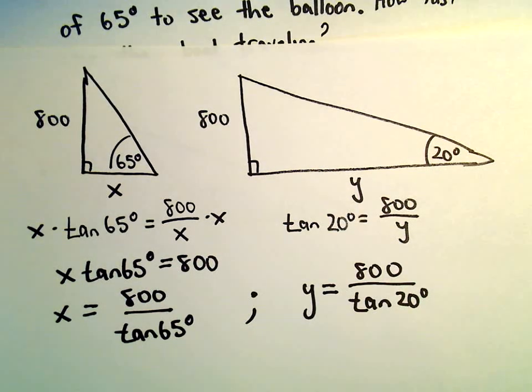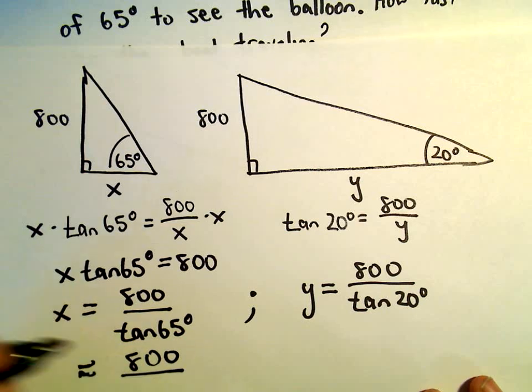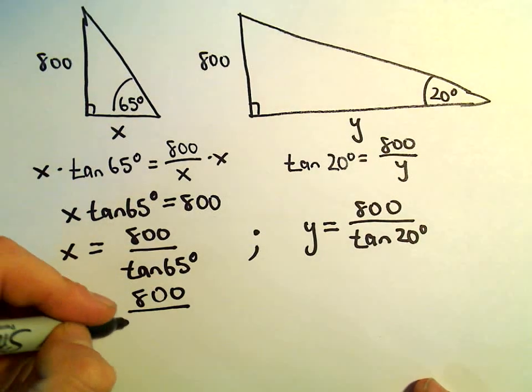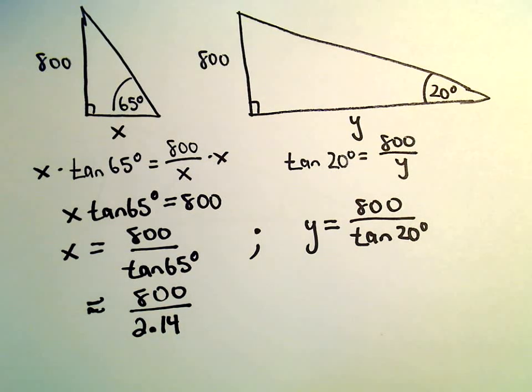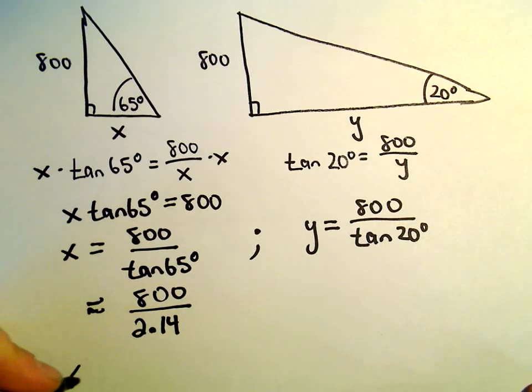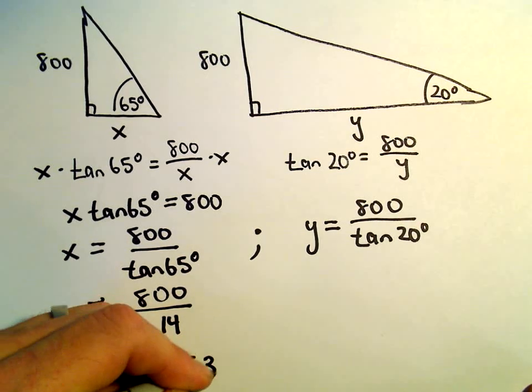I'm going to simplify these down a little bit. We're certainly going to be approximating here. Tangent of 65 degrees, I'm getting that to be roughly 2.14, so approximations from here on out. If we take 800 and divide it by 2.14, we'll get x to be roughly equal to 373.83.